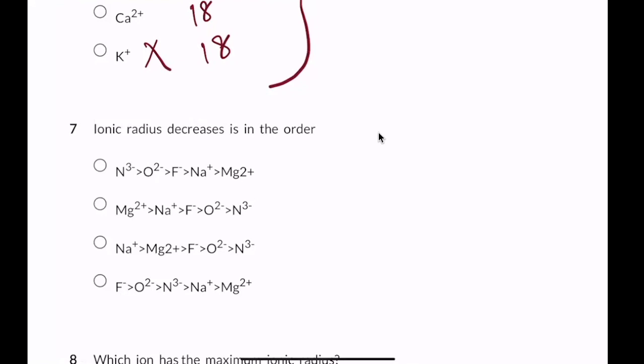Ionic radius decreases in the order — Option A is correct. N3- is isoelectronic. In this isoelectronic series, the atomic numbers are: Na is 11, F is 9, O is 8, N is 7. The smallest atomic number gives the largest radius.